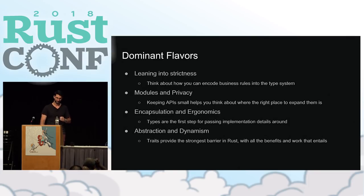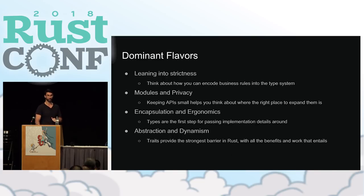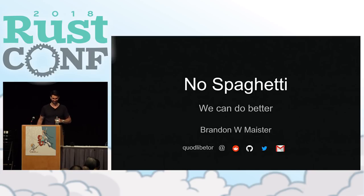I talked about leaning into strictness — trying to encode business rules into the type and lifetime system. Keeping APIs small is really hard to do in general, and the best way to succeed is to make it as small as possible and give yourself speed bumps. That was my talk. Thank you.